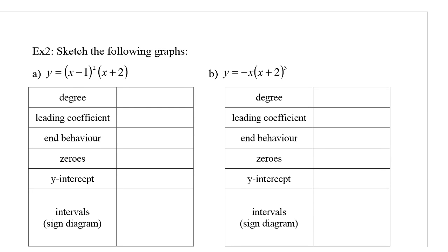Example number 2: sketch the following graphs. The first one asks for what the degree is. Looking at the degree, if we were to multiply everything out, this would give us x squared multiplied by another x, so we would get a degree 3, which is odd. The leading coefficient, well, since there's no negative out in front, the leading coefficient would be positive.